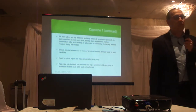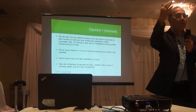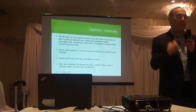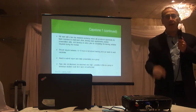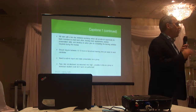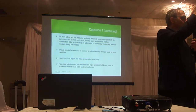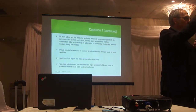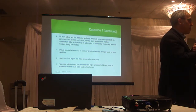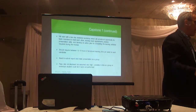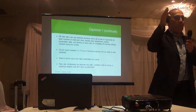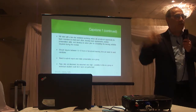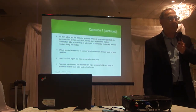The only way to not pass Capstone 1 is to not do what they tell you to do. You make interim submissions, and if something is deficient, they tell you to correct it. As long as you correct it, you will pass. They're not trying to weed people out. Most of the weeding out takes place in Core 1, Core 2, and the electives from which you've been exempt.